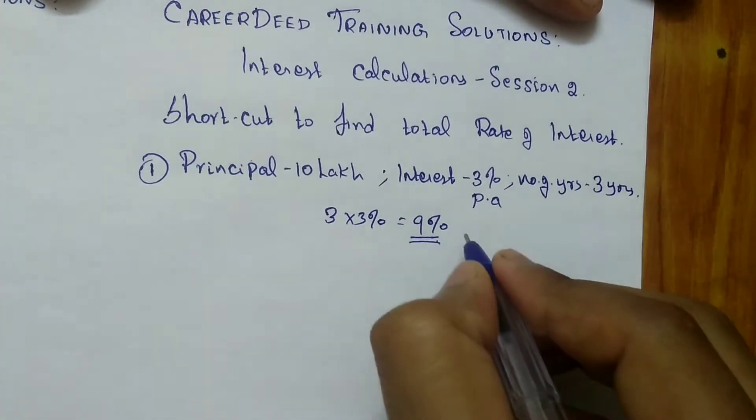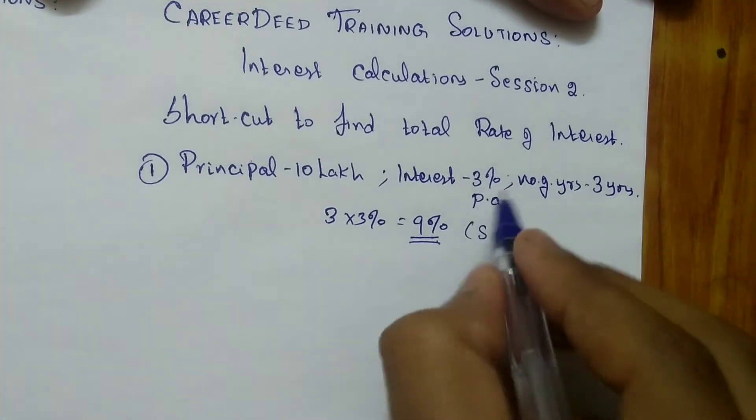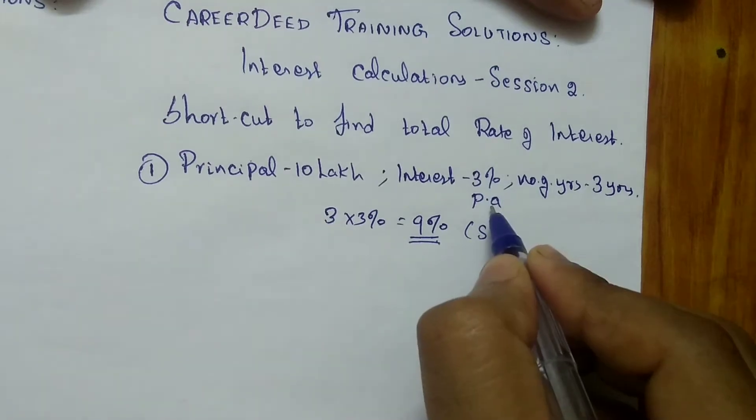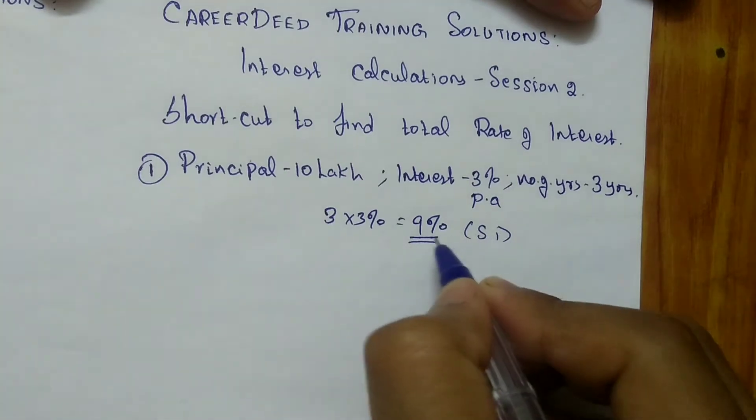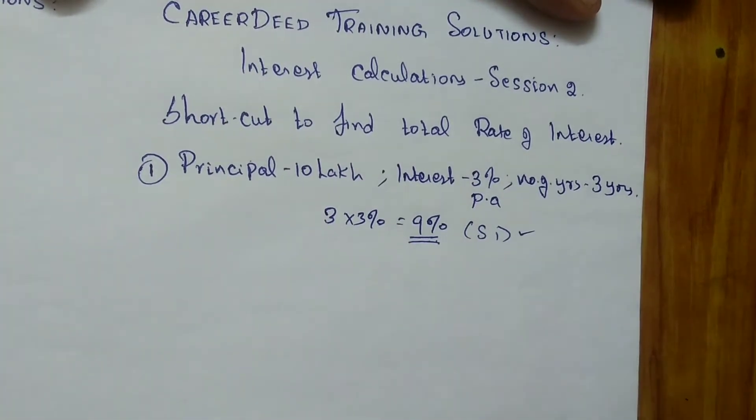So simple interest is quite simple. You have to multiply the total percentage, the percentage per annum with the total number of years. That gives you the total interest that you have to settle at the end of given years.